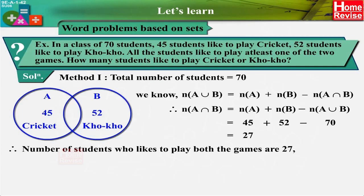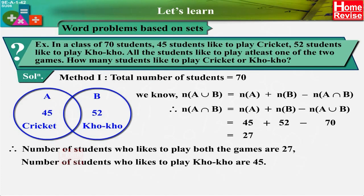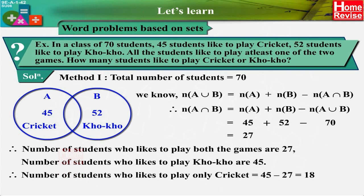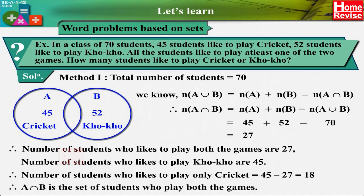Therefore the number of students who like to play both games is 27. The number of students who like to play only cricket is 45 − 27 = 18. Therefore A ∩ B is the set of students who play both games, and n(A ∩ B) = 27.